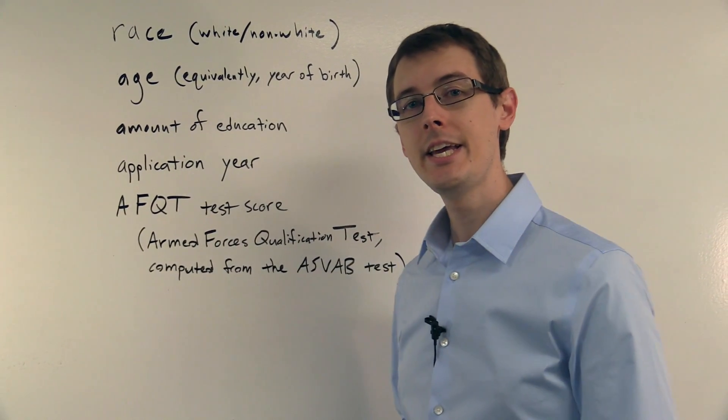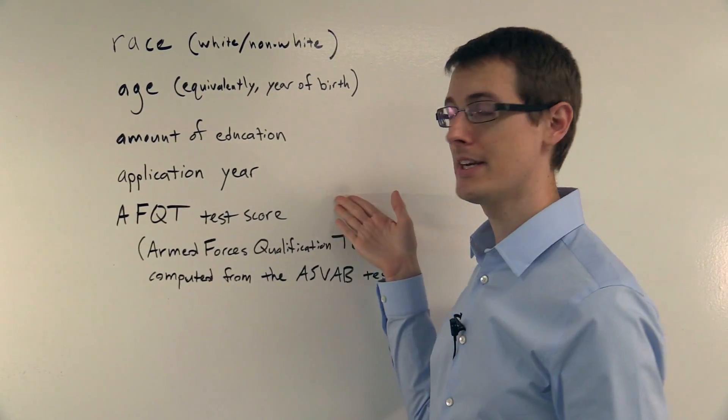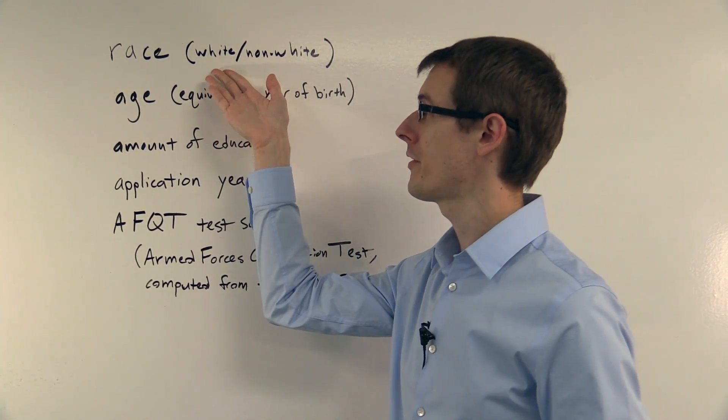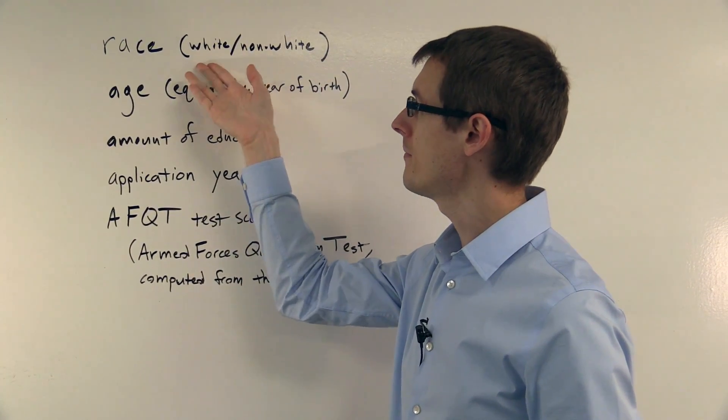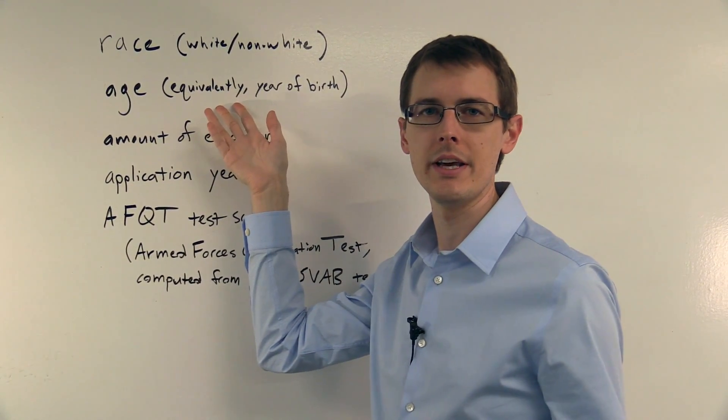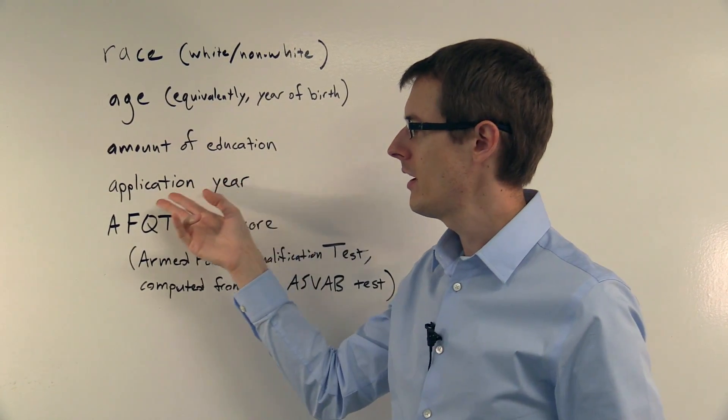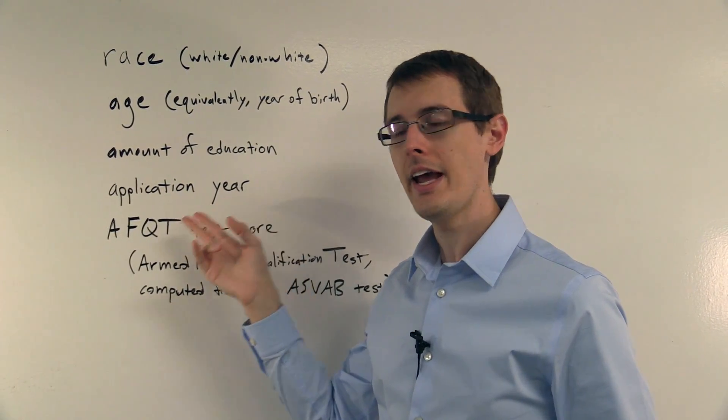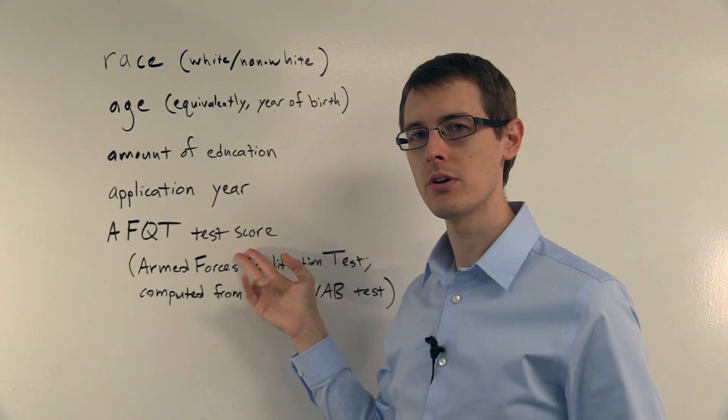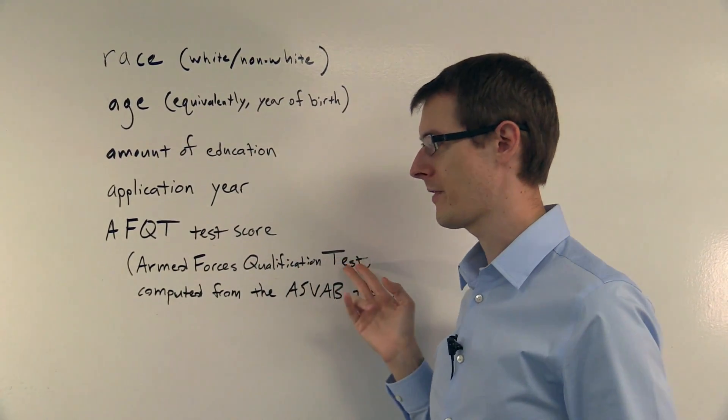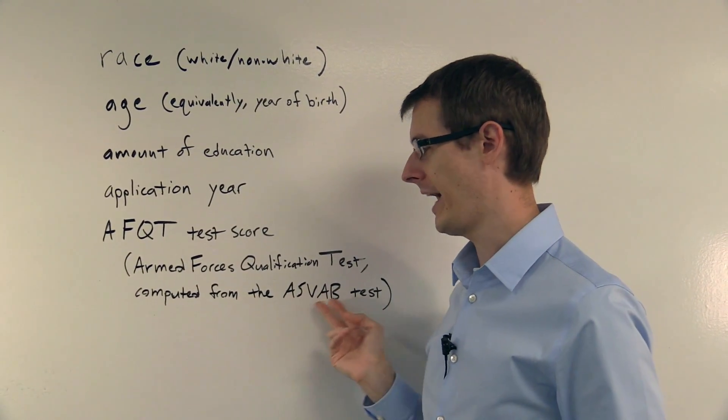In his dataset, he observes a bunch of variables that I've listed here: race, whether the applicant is non-white or white; age, or equivalently, what year you were born; how much education you have; what year you applied in; and your AFQT test scores - that's your Armed Forces Qualification Test, which is computed from the ASVAB test.